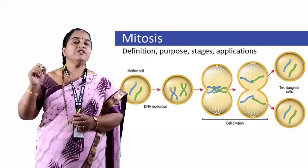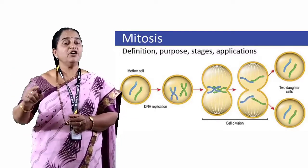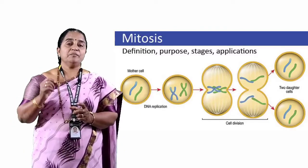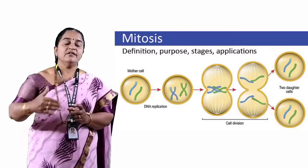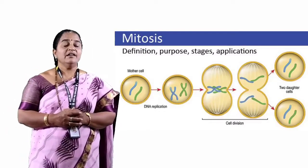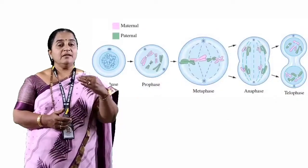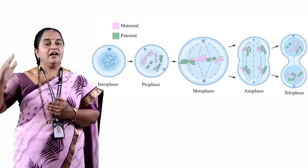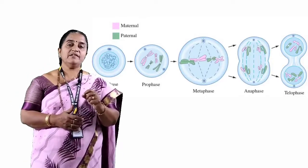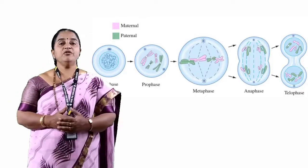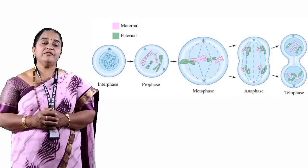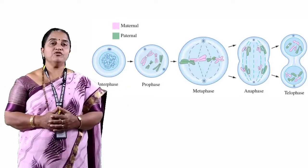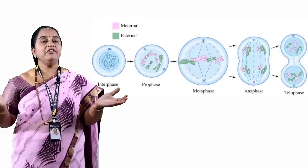Depending upon the specific movements of the chromosomes — which are called vehicles of heredity, or packed DNA molecules along with proteins — which specifically behave during this division phase, we name the four stages accordingly: the first phase is prophase, the middle phase is metaphase, before cell division ends it is anaphase, and the end of cell division is called telophase. So the four phases are prophase, metaphase, anaphase, and telophase.